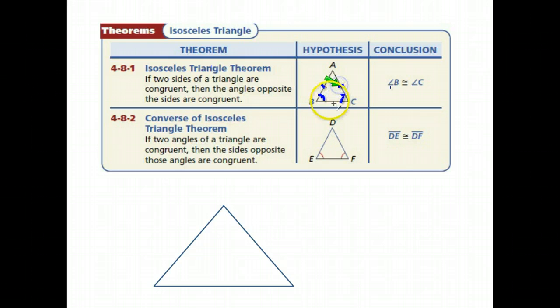If we know these two sides are congruent, we also know these two angles are congruent. The converse—remember, you switch the if and the then—means instead of starting with congruent sides, we start knowing we have congruent angles. If you have two congruent angles, then you know the sides opposite those angles are also congruent.